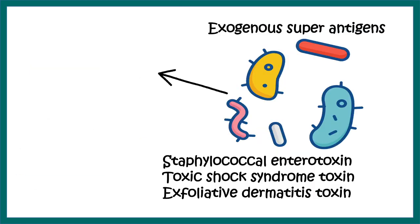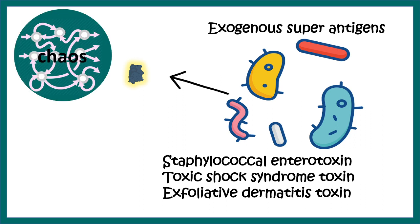Many bacteria such as Staphylococcus aureus secrete staphylococcal enterotoxin, which is an example of a super antigen, and it creates chaos in this system. So super antigens are different from normal antigens in how they can create huge chaos in the immune system, thereby increasing the survival probability of these pathogens.